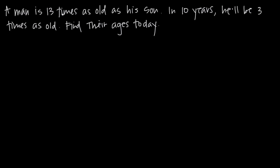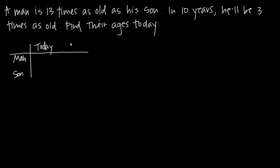We have two people — a man and his son — we have their ages today, and then we have their ages in 10 years. One way to effectively organize the information is to make a little table with the man and his son as rows, and today versus in 10 years as columns. We want to find expressions representing the man's age and the son's age for both time periods.